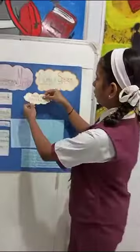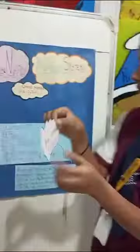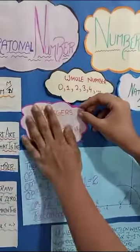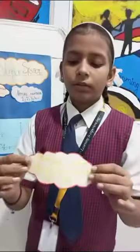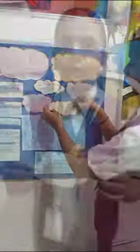Now we will see about the number system: whole numbers, natural numbers, integers, rational numbers, and irrational numbers.